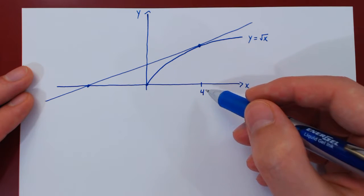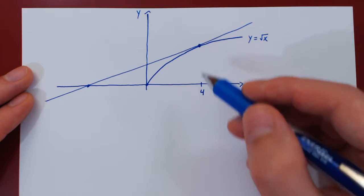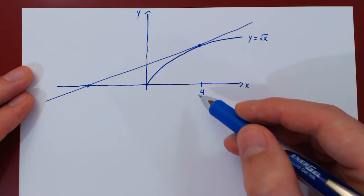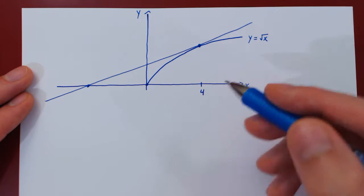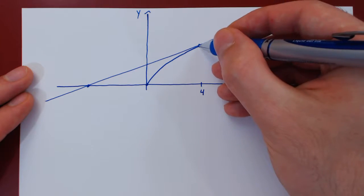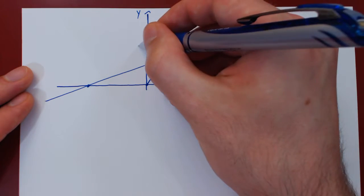The first observation is we need a y-value at x equals 4. Root of 4 is 2, so the corresponding y-value is 2.